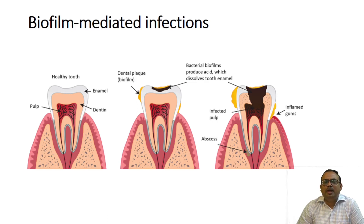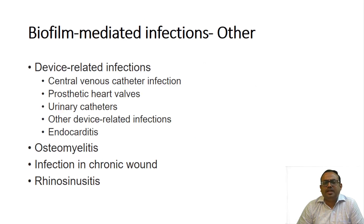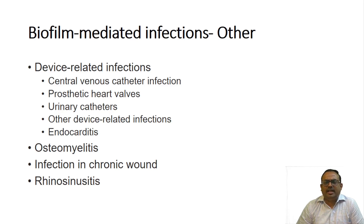Similarly, regarding the role of biofilm in periodontitis: dental plaque containing microorganisms that produce biofilm generates a certain amount of acid which dissolves the enamel of the tooth, finally infecting the pulp and causing periodontitis. Apart from that, there are other biofilm-mediated infections including device-related infections like central venous catheter infections and prosthetic heart valve infections.